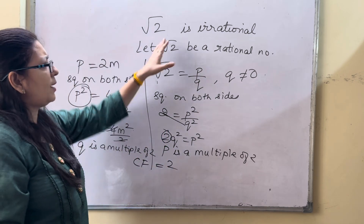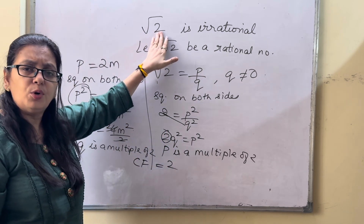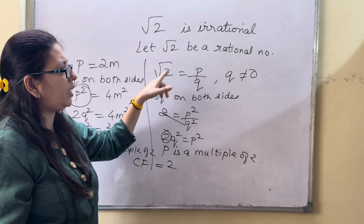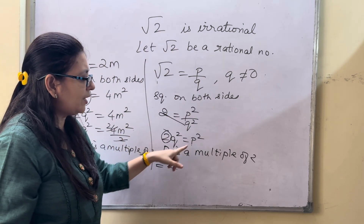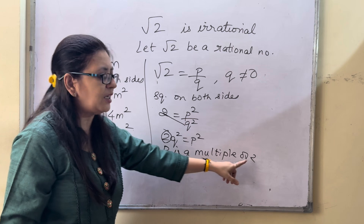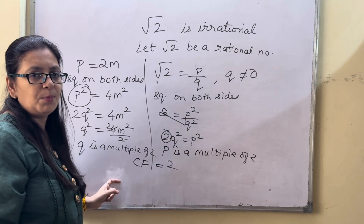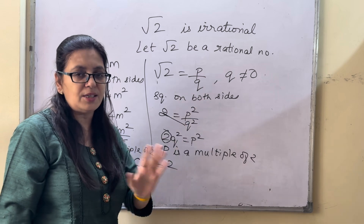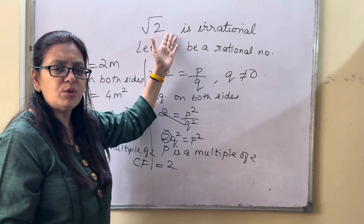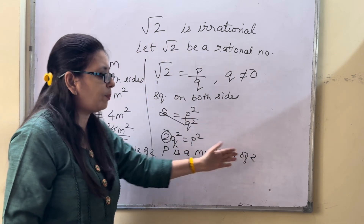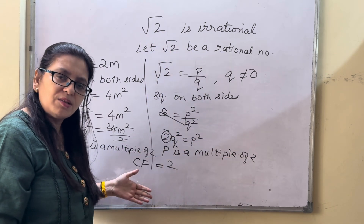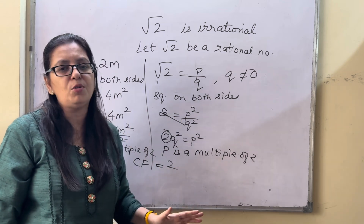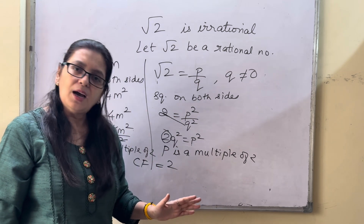For root 3, follow the same pattern: you get p is a multiple of 3, q is a multiple of 3, so the common factor is 3 — which contradicts the assumption. For root 7, you get p and q both multiples of 7, common factor 7 — same contradiction. The same pattern applies throughout.